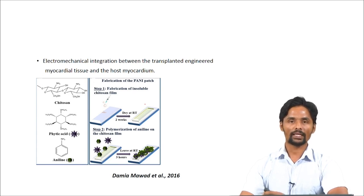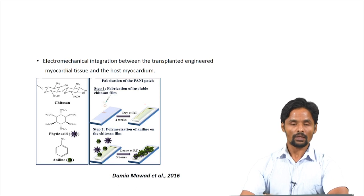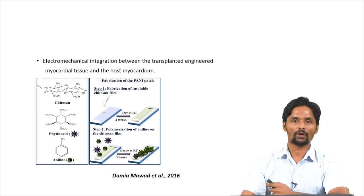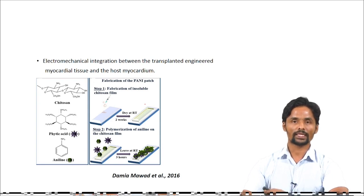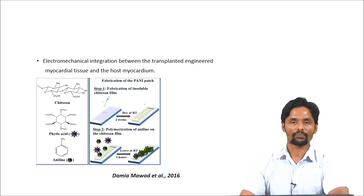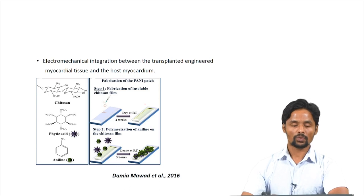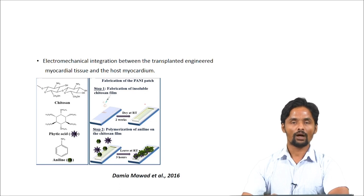The imine and amino groups of aniline are protonated in the presence of protonic acid. However, there are challenges associated with this conducting polymer. When implanted in vivo, the dopants that keep the imine and amino groups protonated are lost in a process called de-doping, which leads to a decrease in conductivity. It will not last for a long time. Another challenge is that the amine groups of aniline are lost at physiological conditions.